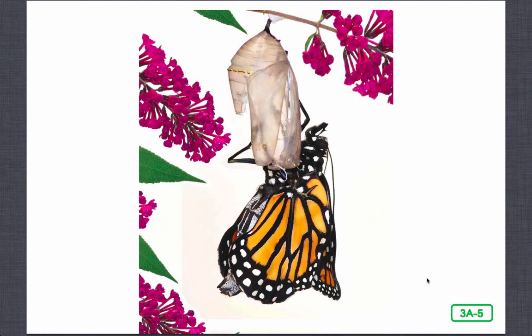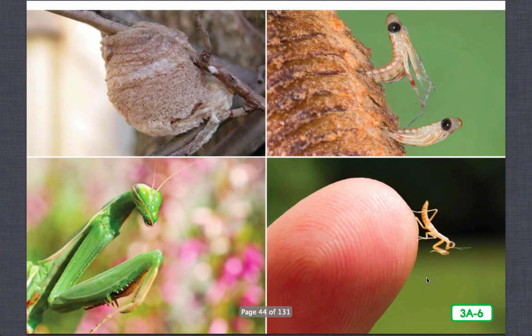Butterflies, moths, beetles, and flies all undergo a complete metamorphosis. Not all insects change so completely. Some insects' young — like mine — are miniature, very small models of their parents after hatching. They do change, so they do experience a metamorphosis, but because it is not a complete change, scientists call it an incomplete metamorphosis. Just like you, the young start off as a smaller version of what they will end up being, slowly growing into an adult.